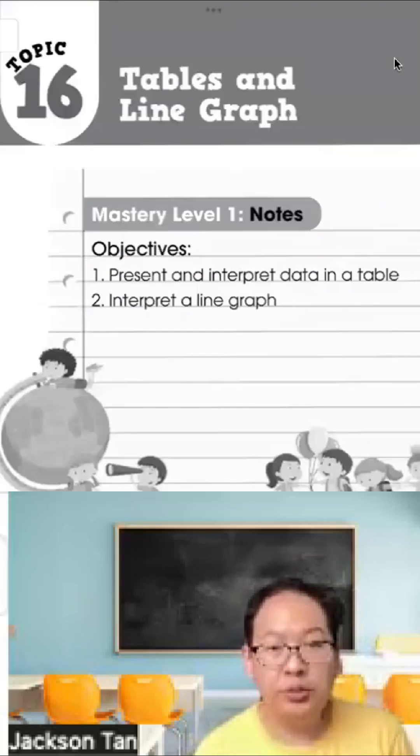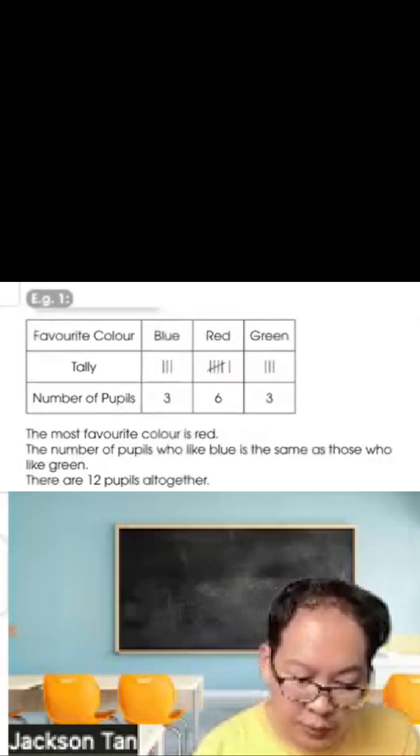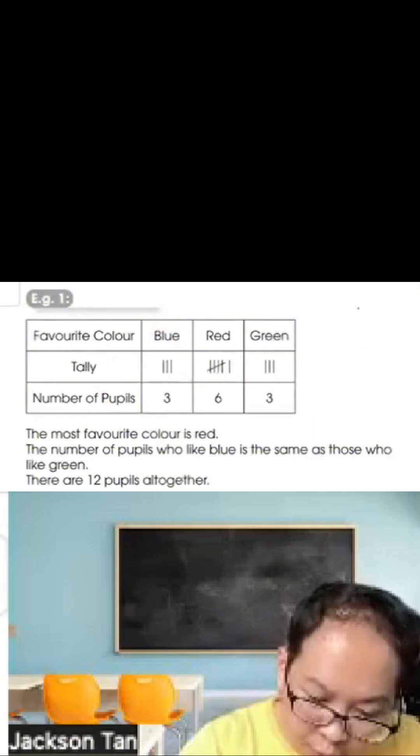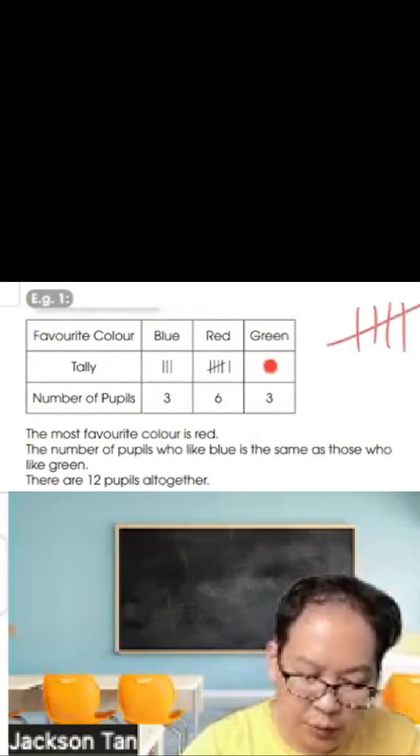Welcome to key form math tables and line graph. Mastery level 1. The objectives are to present, interpret a table, and interpret a line graph. Here is a favorite color table with blue, red, and green, showing tally and number of people. So tally, there are 1, 2, 3, 3 people. If there are 5, what you need to do is 1, 2, 3, 4, 5 like this. Plus 1 is 6. Then 1, 2, 3.